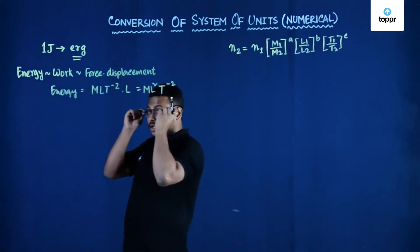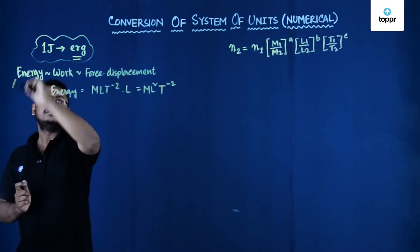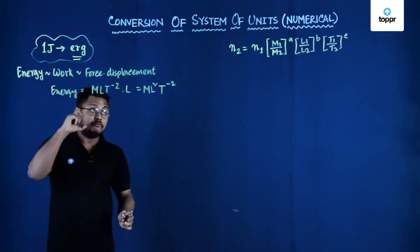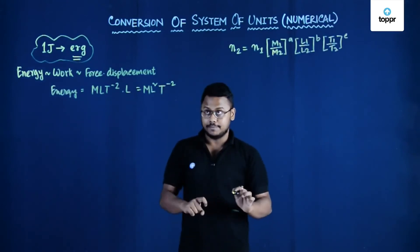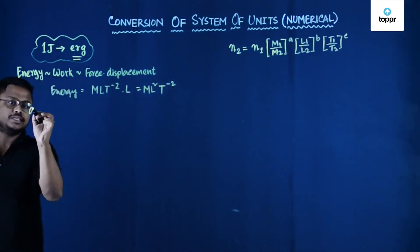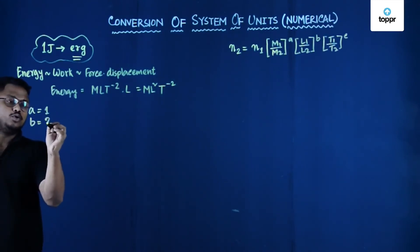So in this particular problem we have to convert one joule to erg. The value of a b c is what we have already identified. So we can write the value of a is equal to 1, b is equal to 2, and c is equal to minus 2.